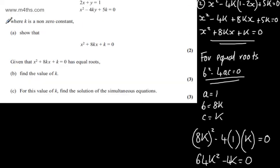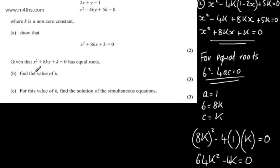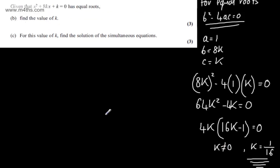We're told in the first part of the question that k is a non-zero constant and in part b we're asked to find the value of k. So we say that k can't be equal to 0. So we have our one answer is k now is 1 over 16.